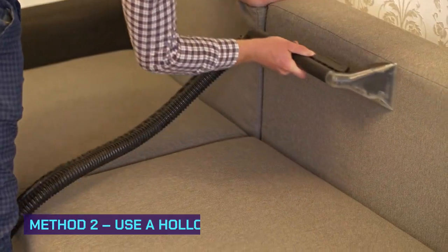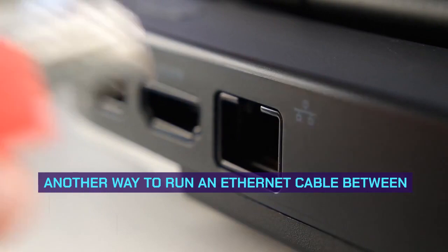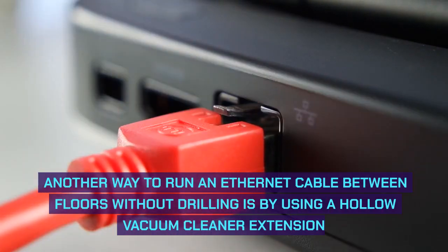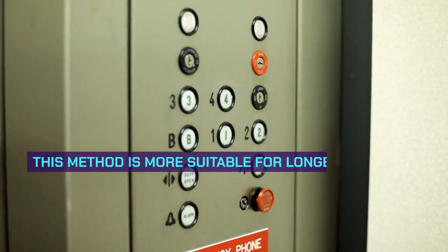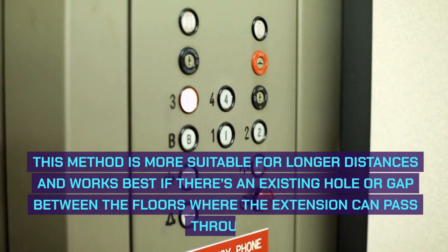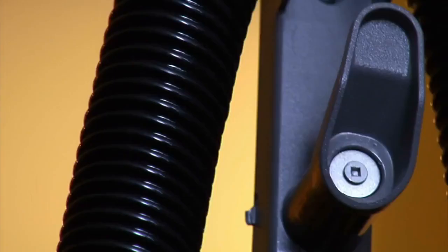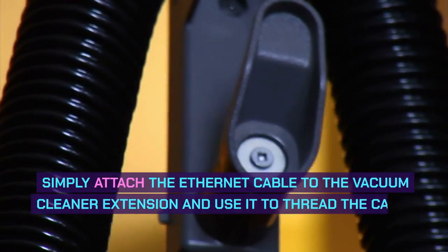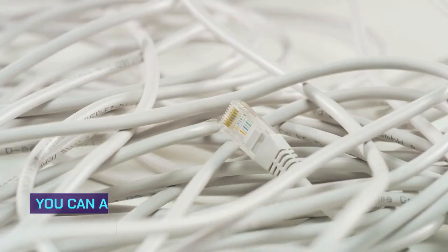Method two: use a hollow vacuum cleaner extension. Another way to run an ethernet cable between floors without drilling is by using a hollow vacuum cleaner extension. This method is more suitable for longer distances and works best if there's an existing hole or gap between the floors where the extension can pass through. Simply attach the ethernet cable to the vacuum cleaner extension and use it to thread the cable through the gap.